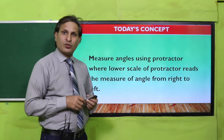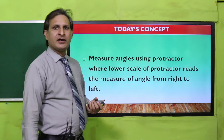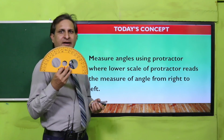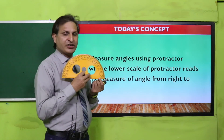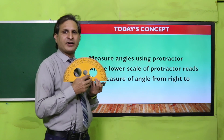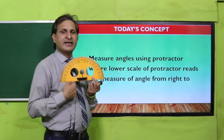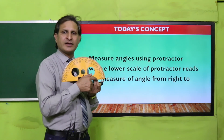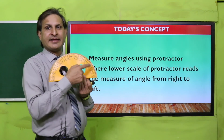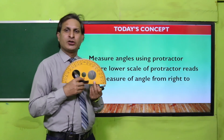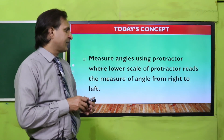Now let's move to today's concepts. We have to measure angles using the protractor, reading the lower scale from right to left. This means we look at the lower scale and, reading it anti-clockwise, we can measure a particular angle.